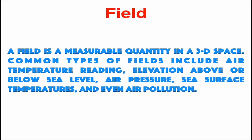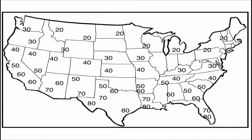A field map displays fields. A field is a measurable quantity in a 3D space. Common types of fields include air pressure readings, elevation above sea level, air pressure, sea surface temperatures, and sometimes even air pollution. A typical field map would look something like this — these are air temperatures across the United States. We call this a field map because the field data is displayed across a two-dimensional map.